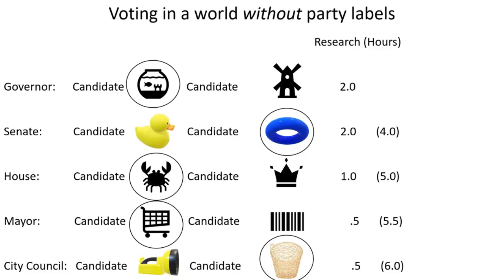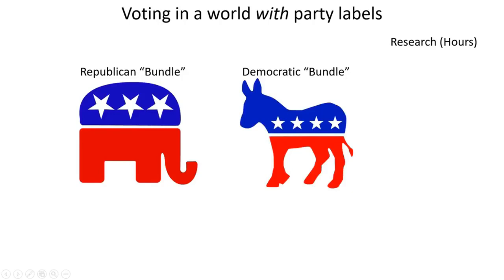This is what makes voting in a world without party labels so difficult — you have to make multiple binary choices, a binary decision being a choice between two things. Voting in a world with party labels is much easier. What the Republican Party and the Democratic Party have done is created these bundles of issues — issues the Republican Party stands for, and issues the Democratic Party stands for.